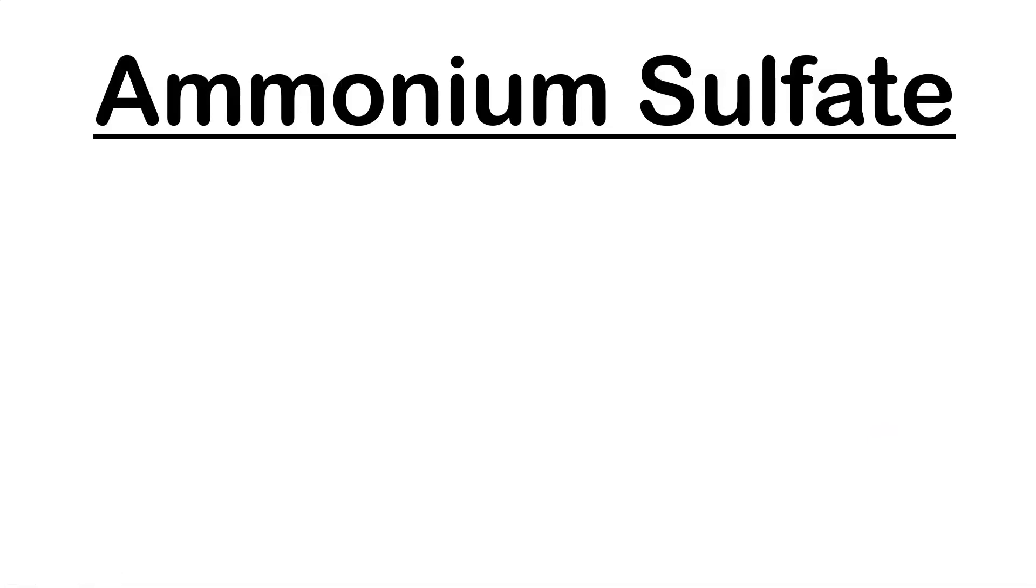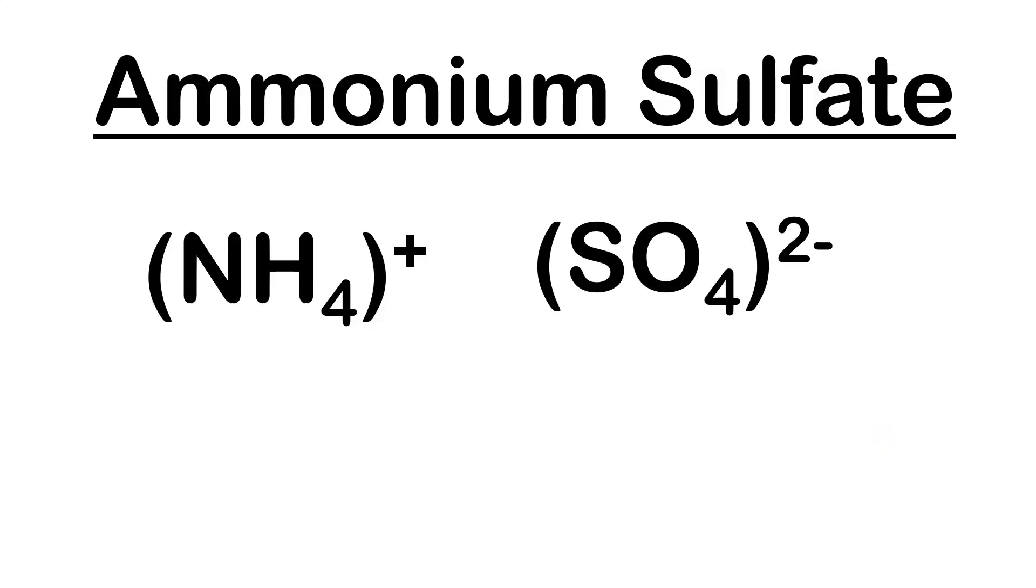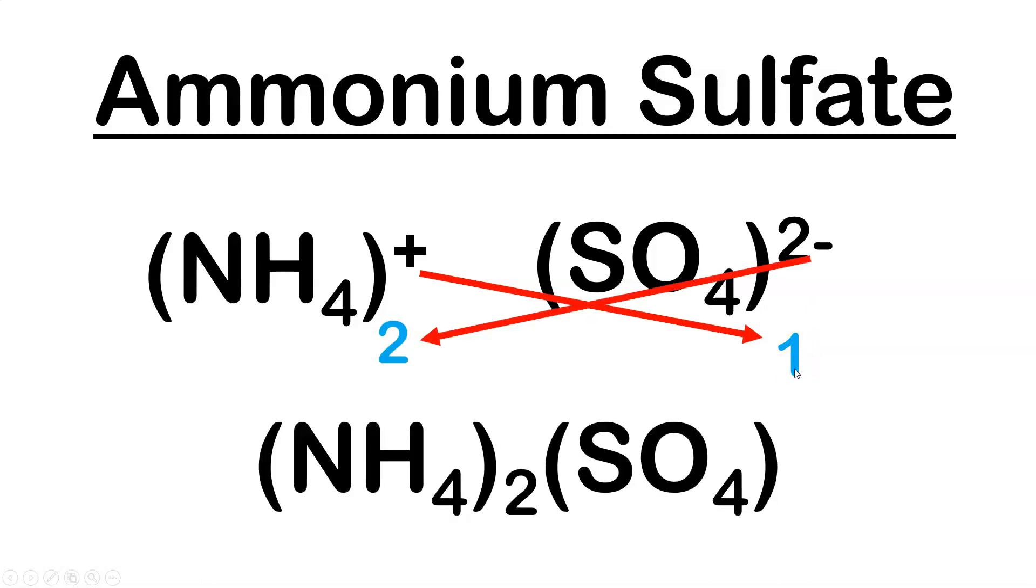You can have two polyatomic ions. You could have ammonium sulfate, for example. Ammonium is plus one. Sulfate is minus two. The one crosses over. The two crosses over. In order for this to be neutral, I need two ammoniums, and I need one sulfate package. Do not distribute this out. Leave it in parentheses. Leave it as a little packaged unit. You have two of these packages.